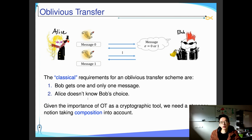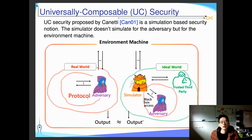Keep in mind that this is a classical requirement for an OT scheme. Given the importance of an oblivious transfer protocol as a cryptographic tool, we need a stronger security definition that takes composition into account. The security notion is called universally composable security, or UC security, which is proposed by Canetti. This is a simulation-based security definition.